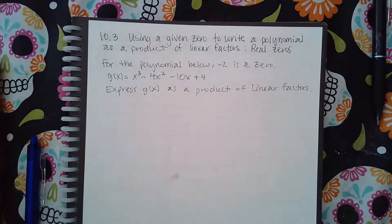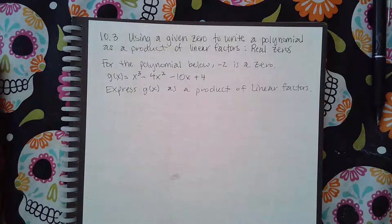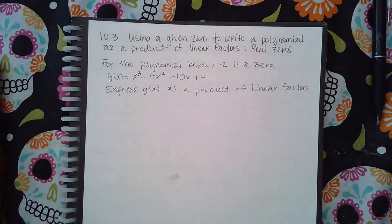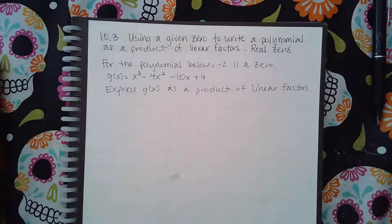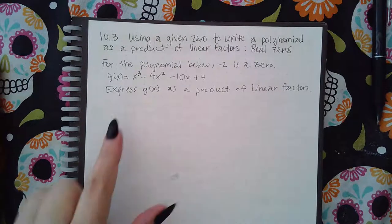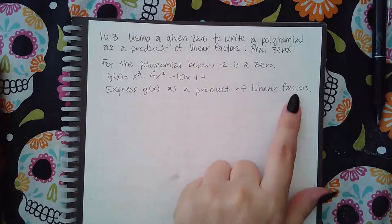Okay, 10.3, using a given zero to write a polynomial as a product of linear factors, real zeros. So for a polynomial below, negative two is a zero. It's telling you that. Then it wants you to express g(x) as a product of linear factors.